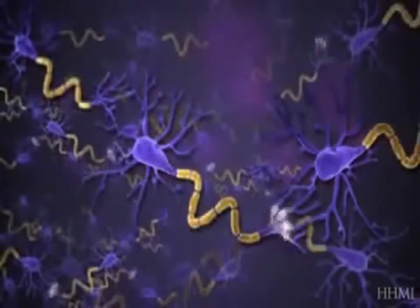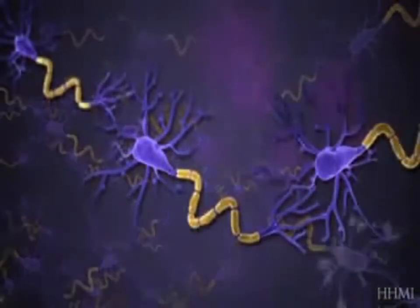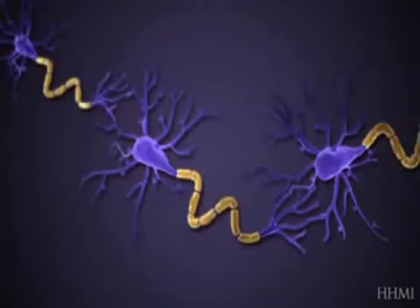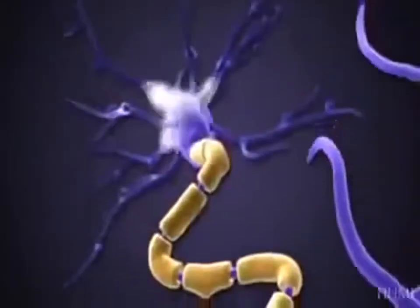We're going to be looking at these electrical impulses, these flashes, which are called action potentials, crossing three neurons in a circuit.